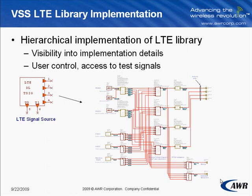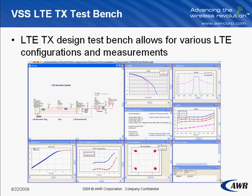This slide shows the implementation of the LTE downlink signal source. Users can look into its implementation, even modify it, or add access to various test signals within this block. As part of the LTE library, we have also developed design test benches that are customized to the LTE signals and measurements, and may be used for evaluating devices under test, or DUTs, particular to the LTE transmitters or receivers. These test benches allow for various configurations of the LTE signals, and include measurements configured according to the LTE specifications. The VSS platform allows users to easily add many other measurements available in VSS.